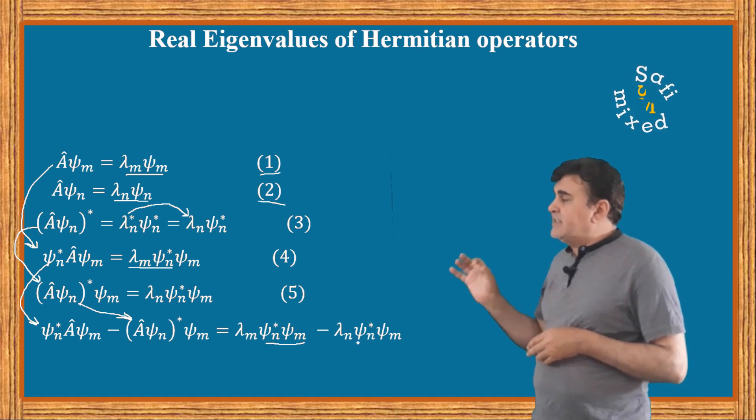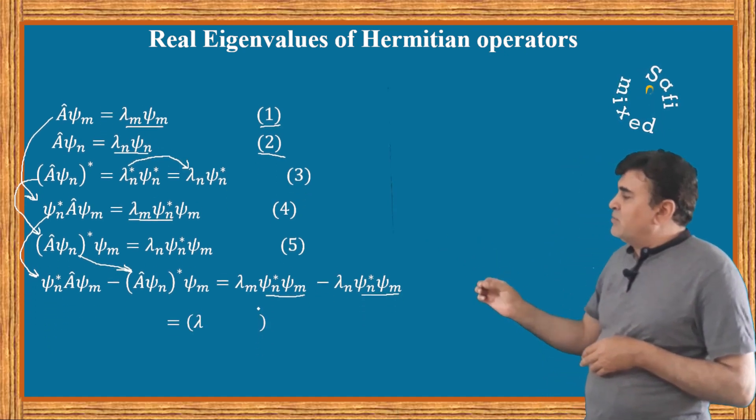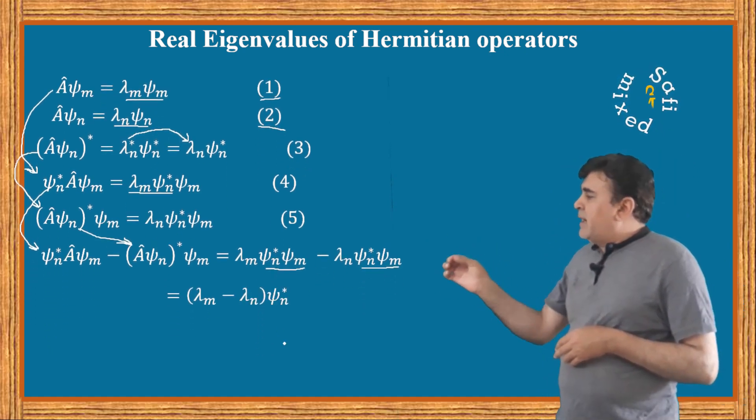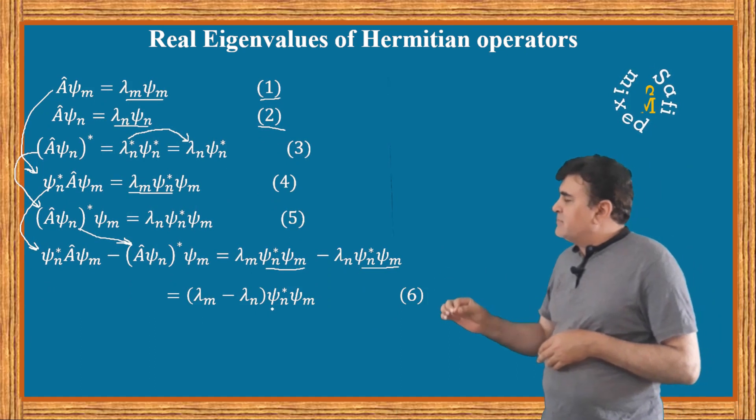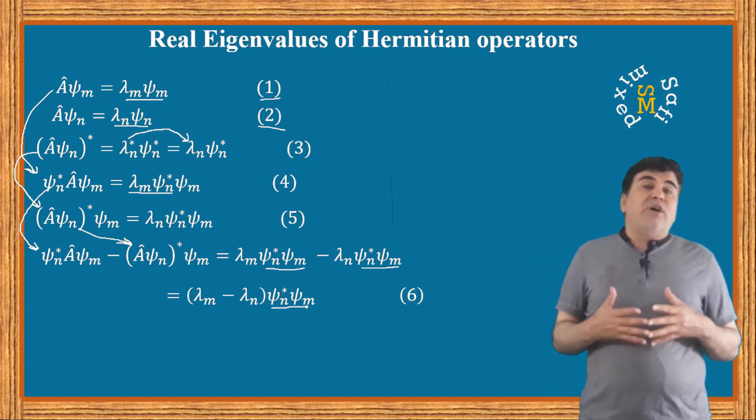We see from the right side we can take ψ_n* ψ_m common from the two terms and put them into the form (λ_m - λ_n) times ψ_n* ψ_m.